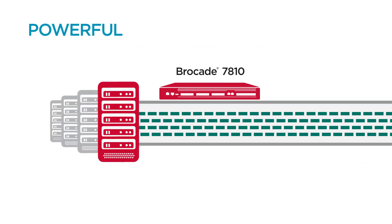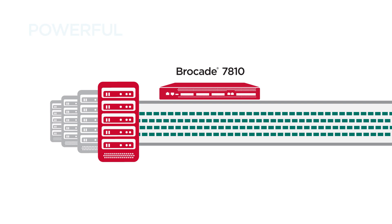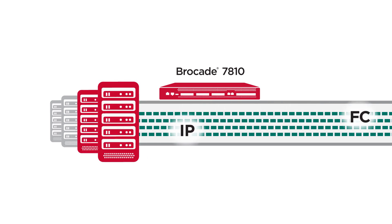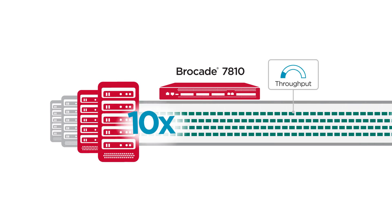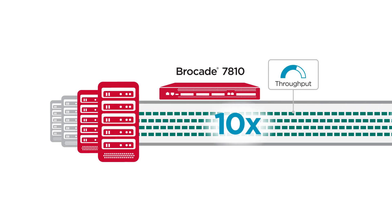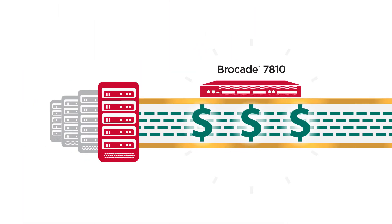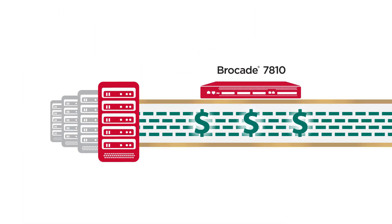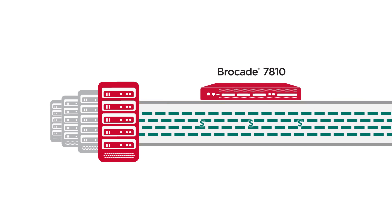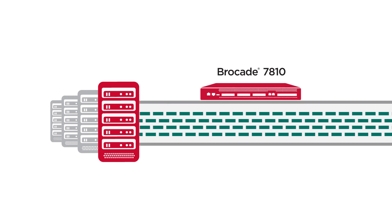It optimizes and compresses fiber channel and IP replication traffic, achieving at least 10 times the throughput that an array can achieve on its own, which means you can reduce costs by switching to less expensive WAN connections.